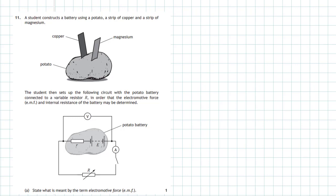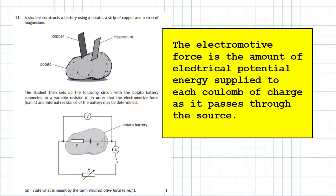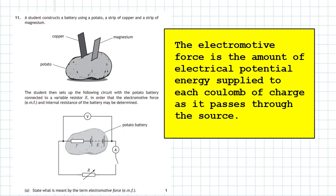You have to remember this very famous paragraph: the electromotive force is the amount of electrical potential energy supplied to each coulomb of charge as it passes through the source. So if you have an EMF of say six volts, then what that really means is for each coulomb of charge that passes through that source, they'll gain six joules of energy. Another way of saying the volt is six joules per coulomb.